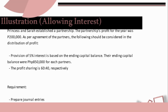Next problem: provision of 5% interest based on the ending capital balance. Their ending capital balance was P850,000 for each partner. The profit sharing is 60-40 respectively. Again, our requirement is to prepare journal entries. This time, there's no salary, but both partners are allowed interest on their capital. The basis of the interest is their ending capital balances. Both partners have P850,000 ending capital balance.